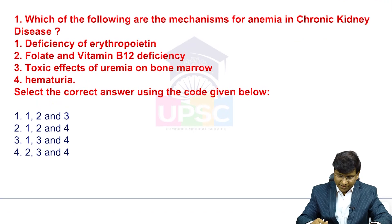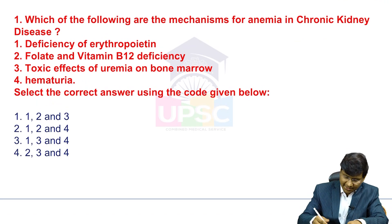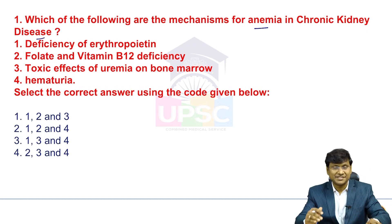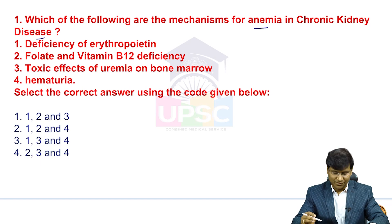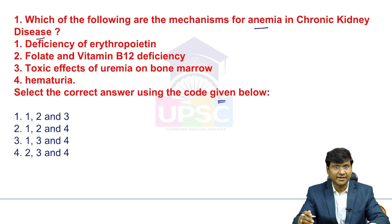Coming to the first question: which of the following are the mechanisms for anemia in chronic kidney disease? The options are: first, deficiency of erythropoietin; second, folate and vitamin B12 deficiency; third, toxic effects of uremia on the bone marrow; and fourth, hematuria. Select the correct answer using the code given below.